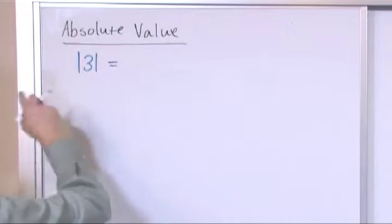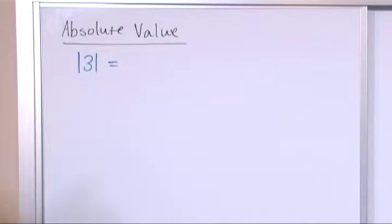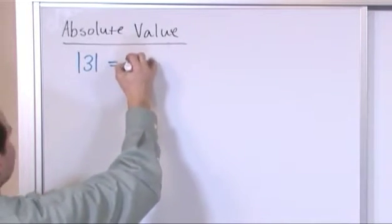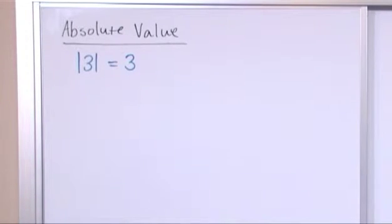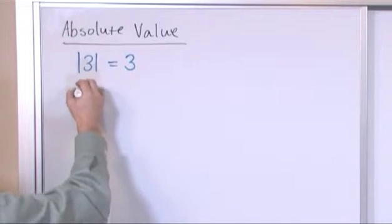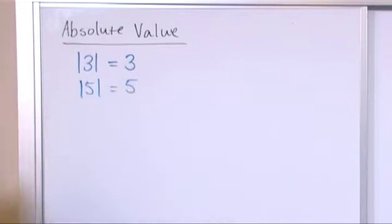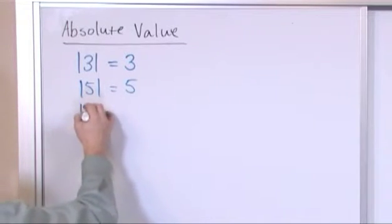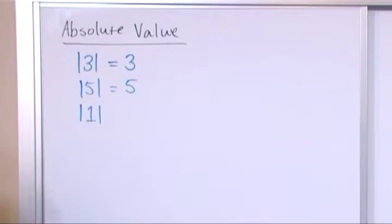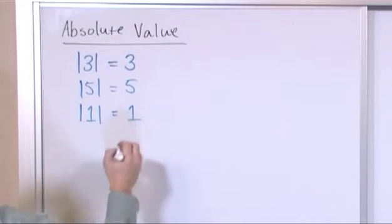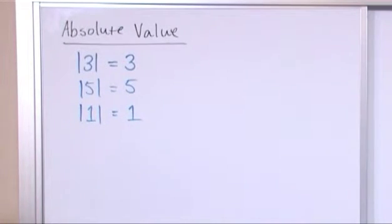The absolute value of the number three, which is an everyday number you've dealt with all your life, is just the number three. I'm going to give you a few examples and then we're going to wrap it up with a general observation. The absolute value of the number five that you've learned all your life is just the number five. The absolute value of the number one that you've dealt with all your life is just the number one. So you see, it's not a hard concept.